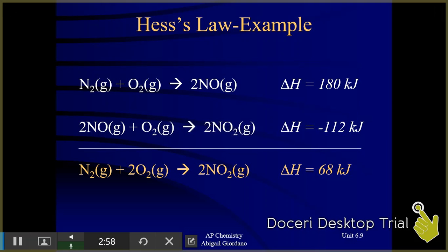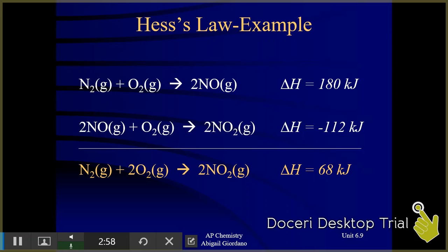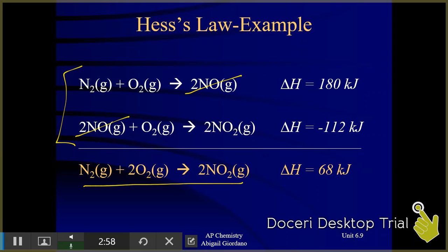Back from the kinetics chapter, we did some of this same thought process. Anything that occurs in identical form on opposite sides of the arrow can be canceled out — so those cancel, and those cancel. When I add these equations together, here is my overall equation. The overall heat change is simply the heats of the individual elementary steps added together.